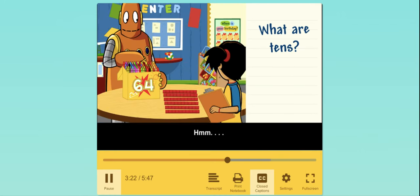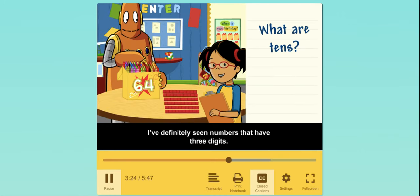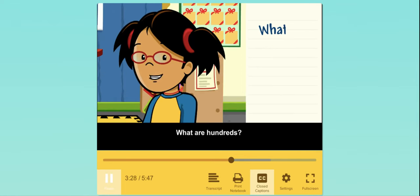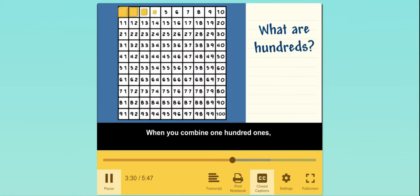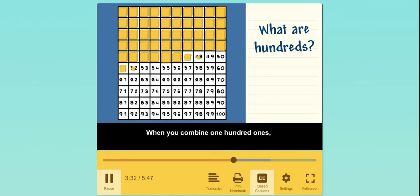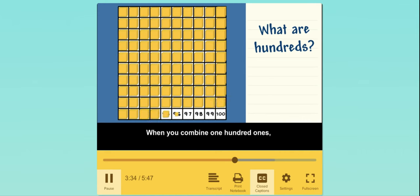I've definitely seen numbers that have 3 digits. What are hundreds? When you combine 100 ones, you get a group of 100.